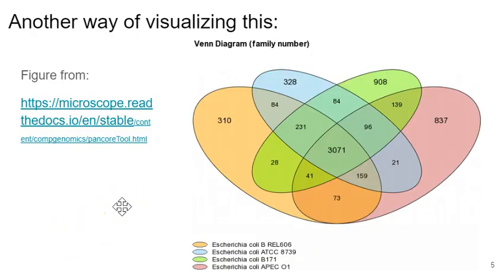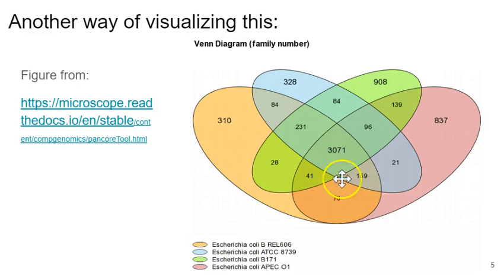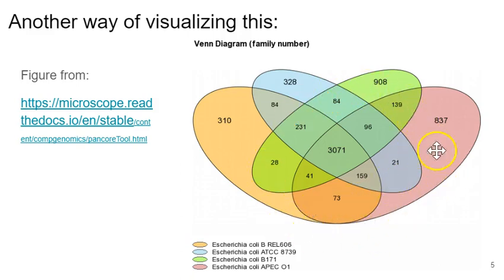Another way of visualizing these ideas is the Venn diagram. Each circle represents the genetic content from a particular isolate of the same species — in this case, E. coli. For example, this circle here is all of the genes from E. coli APEC-01. The place where the Venn diagram overlaps for each single organism sequenced — this 3,071 — that's the true core genome for these four E. coli strains; they all share those 3,071 genes. 837 genes only belong to E. coli APEC-01; those are considered variable genes and unique to that strain. Everything around this central core region is the variable genome — some of it is unique, and some is shared by two or more strains.